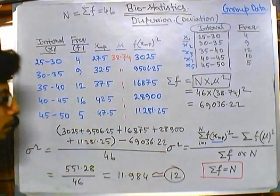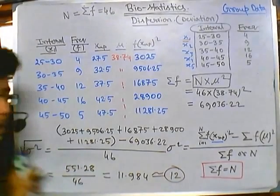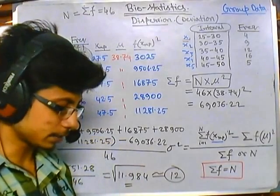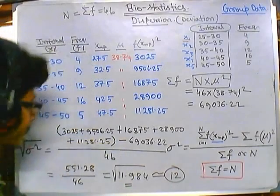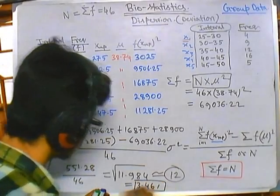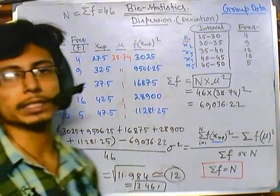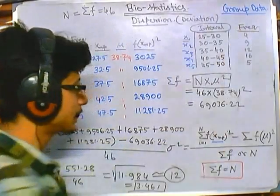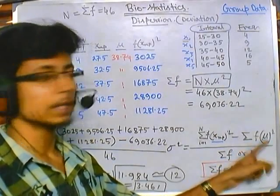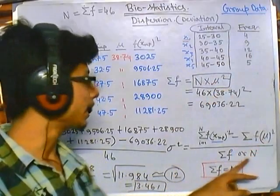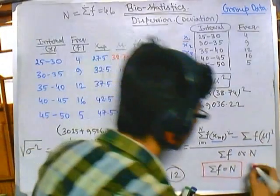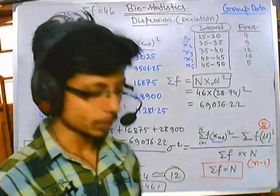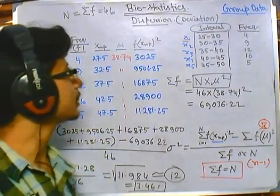To find the standard deviation, we take the square root of the dispersion value. The square root of 11.984 gives us 3.461. So the standard deviation of this grouped frequency data is 3.461. If the data is a whole population, use capital N and mu. If it is a sample, use (n−1) in the denominator and x-bar instead of mu. This is the key difference between population and sample calculations.